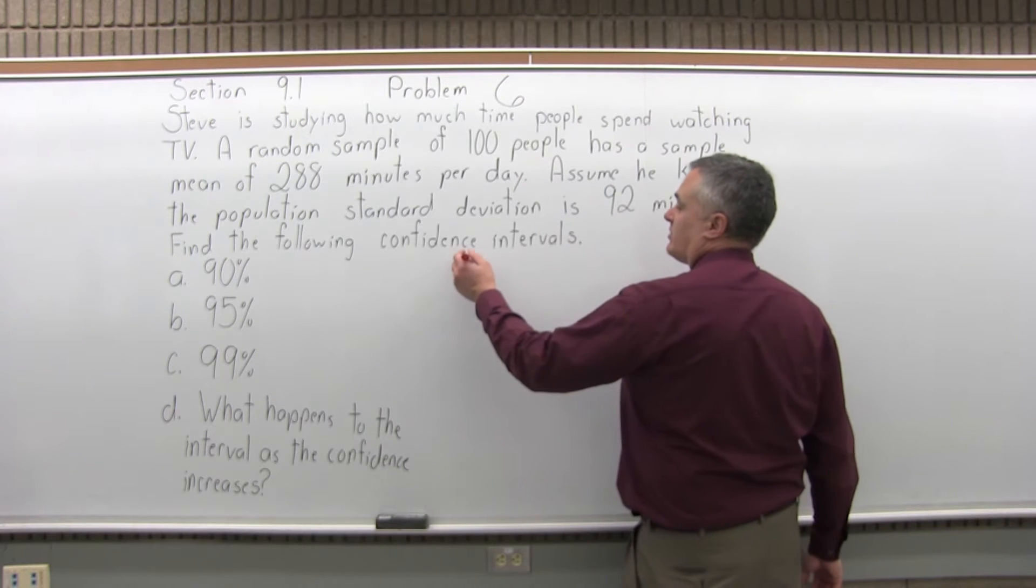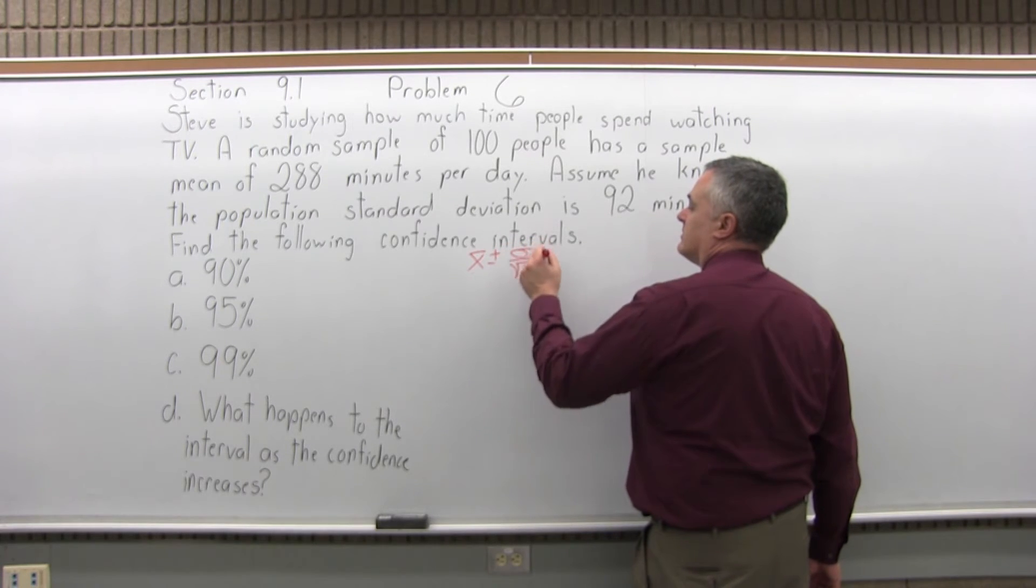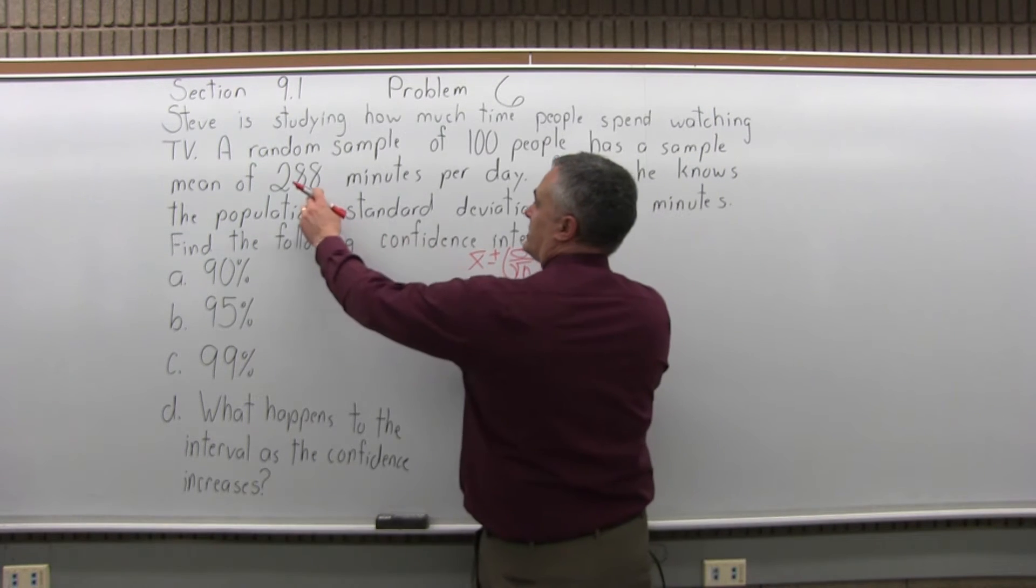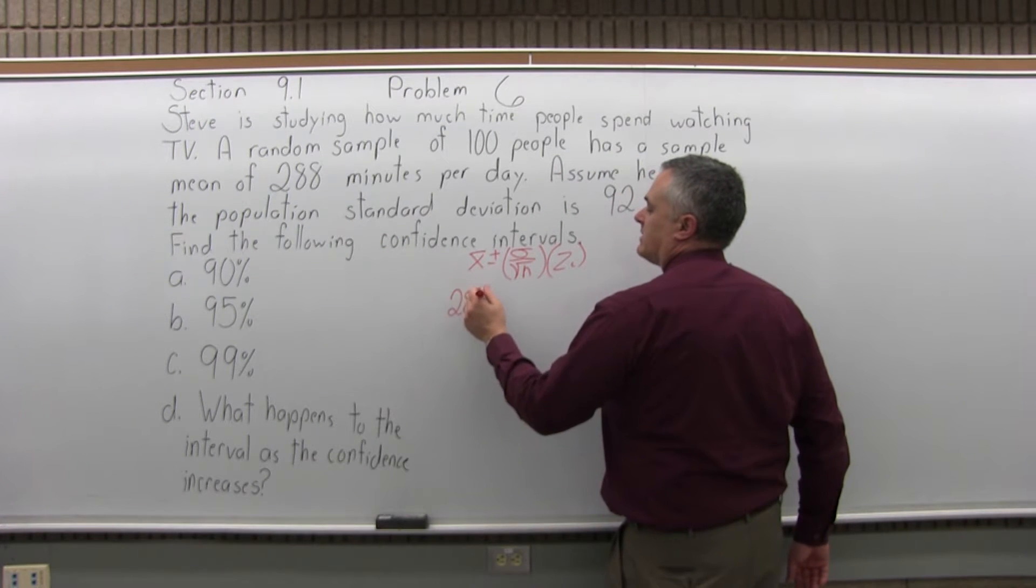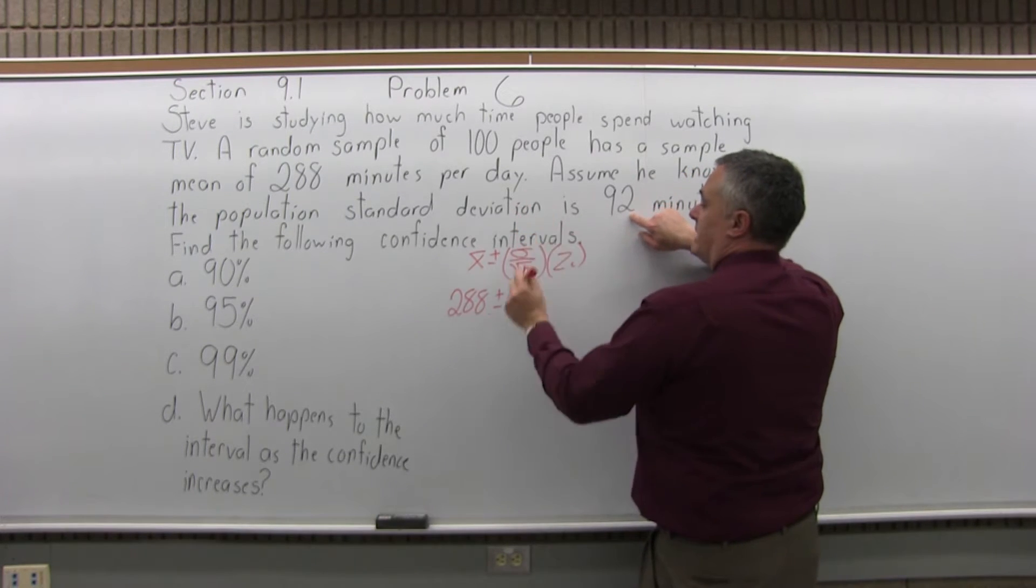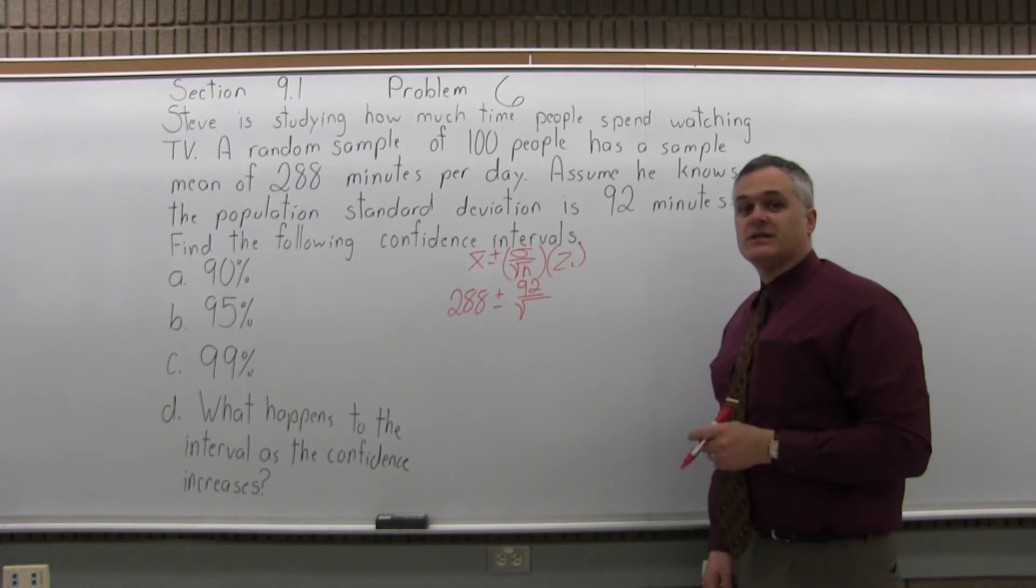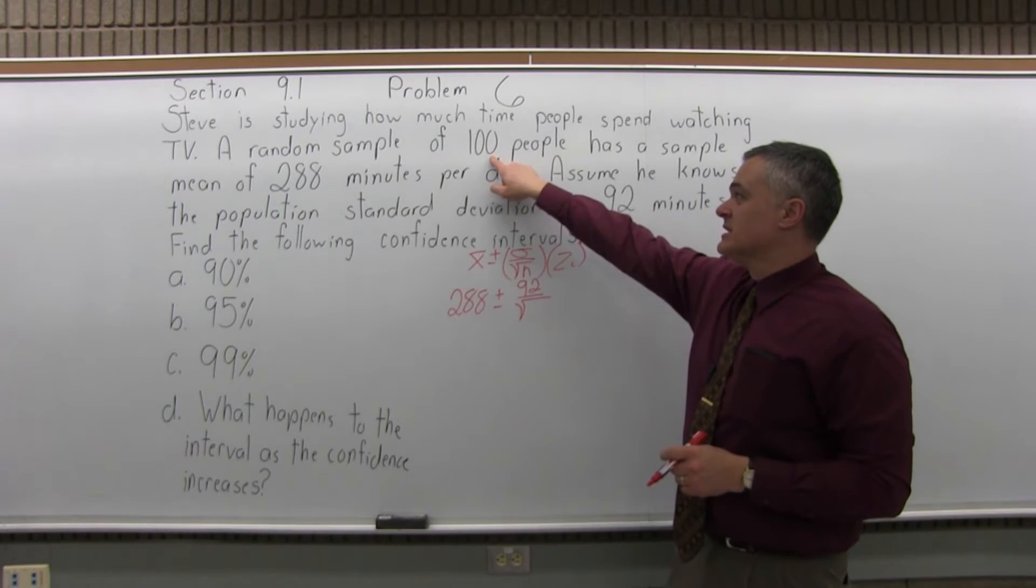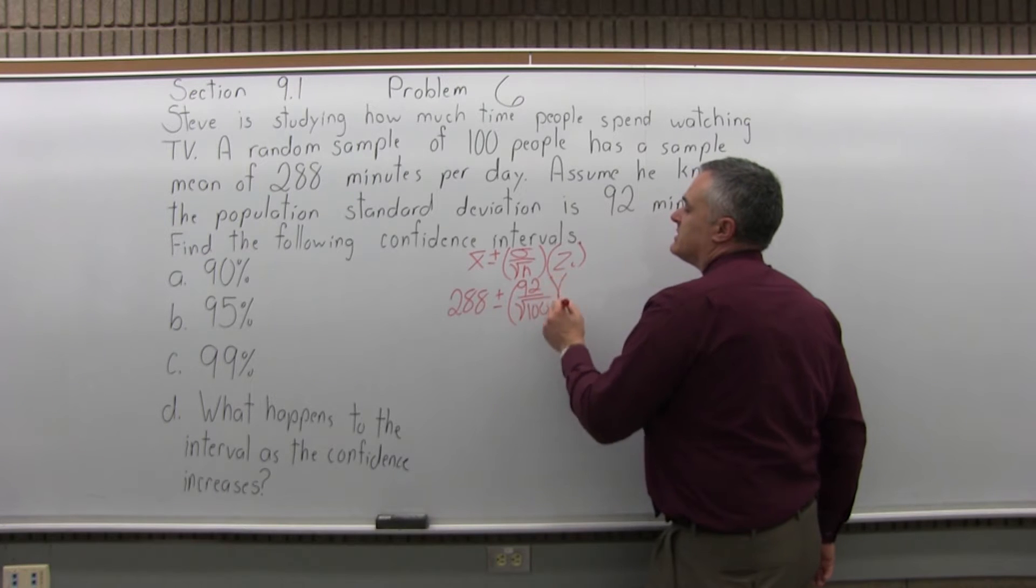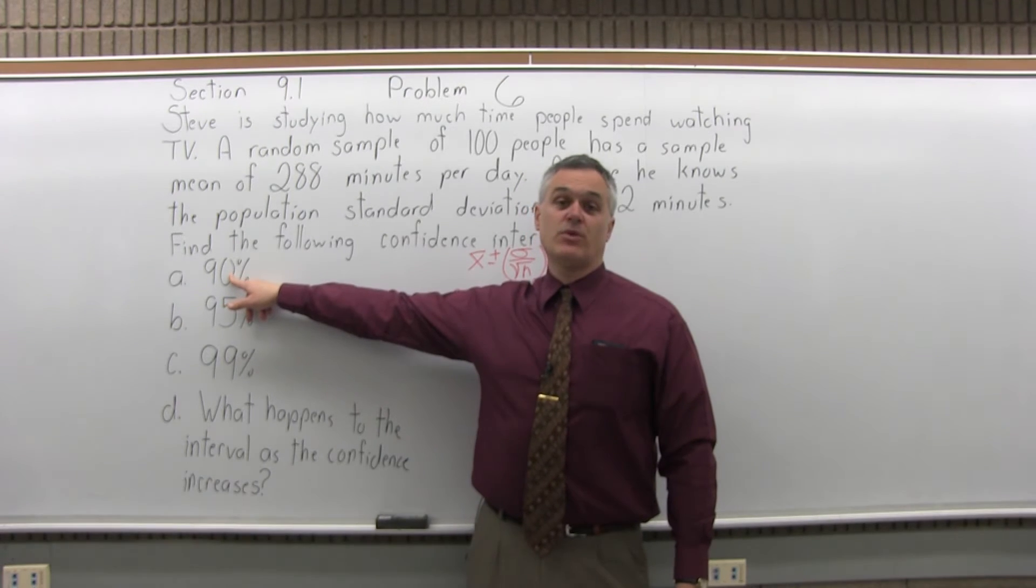The confidence interval formula is x bar plus or minus sigma over square root of n times z sub c. The sample mean x bar is 288 minutes per day, plus or minus sigma, the standard deviation of the population, which is 92 minutes, over square root of n. The sample size n is 100. The confidence coefficient z sub c for 90% confidence is 1.645.